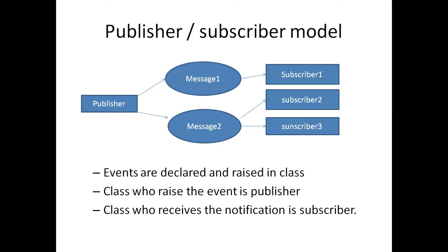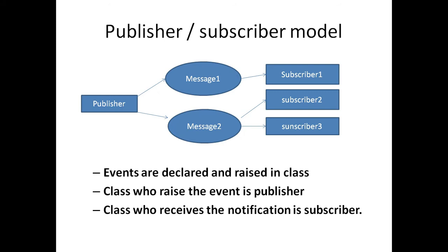First is the publisher subscriber model. Events are declared and raised in a class. The class that raises the event is known as the publisher, and the class that receives the notification is known as the subscriber. Here the publisher sends two messages — message 1 and message 2. Subscriber 1 receives message 1, whereas subscriber 2 and subscriber 3 receive message 2.